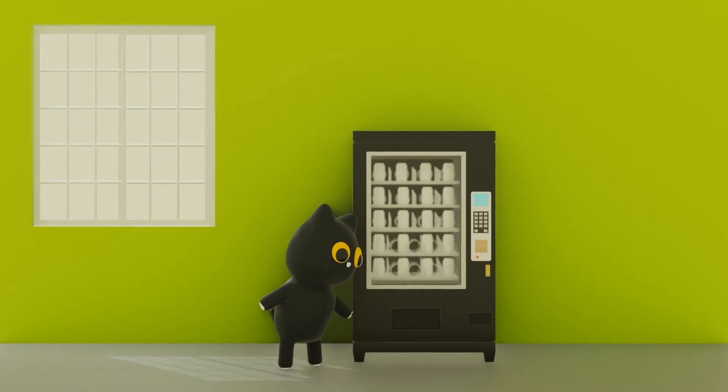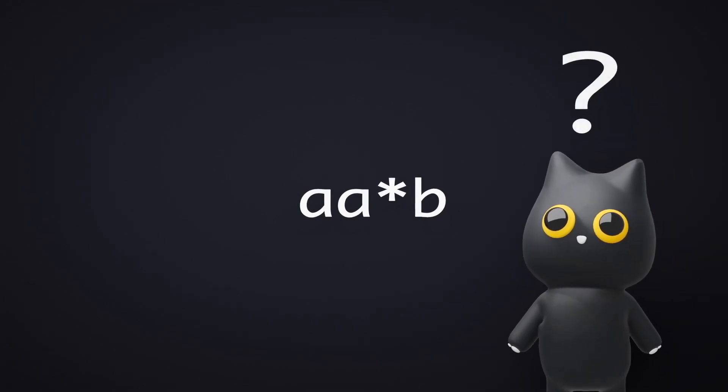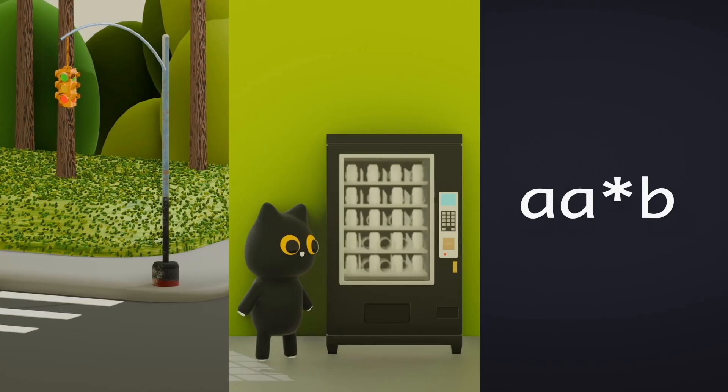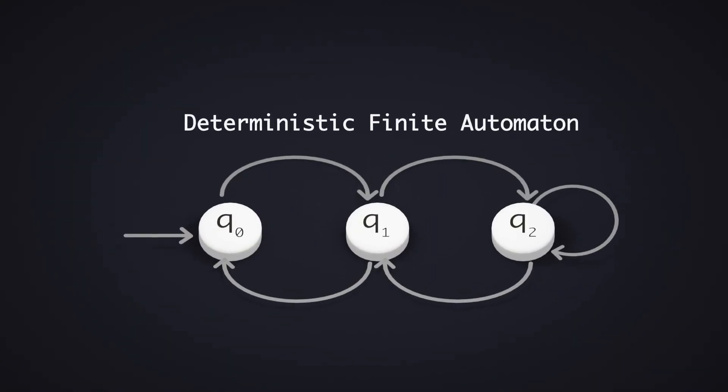Traffic lights, vending machines, regular expressions that we totally understand and adore. Do you know what these things in your daily life have in common? They are all powered by this one simple machine, the deterministic finite automaton.